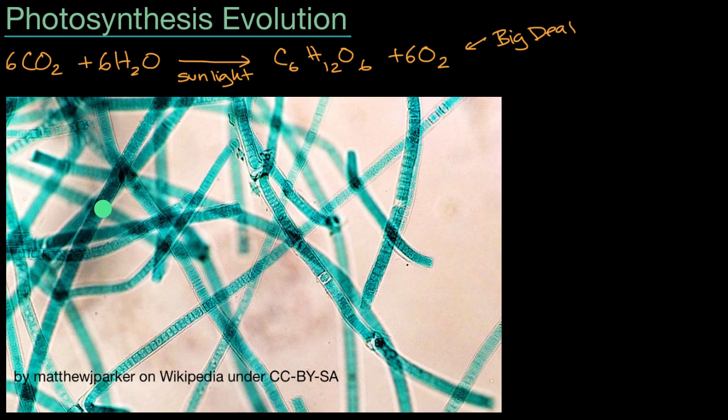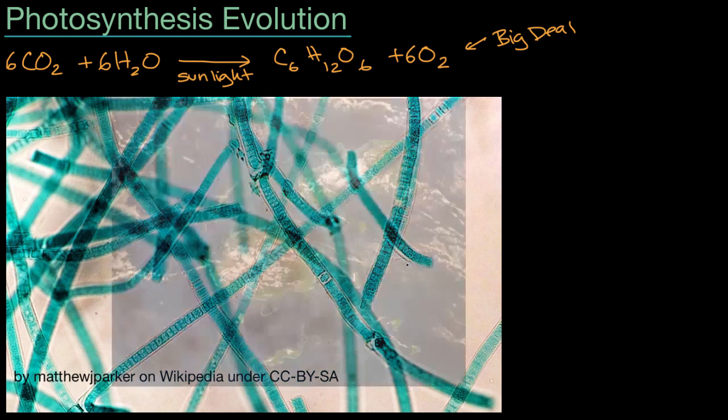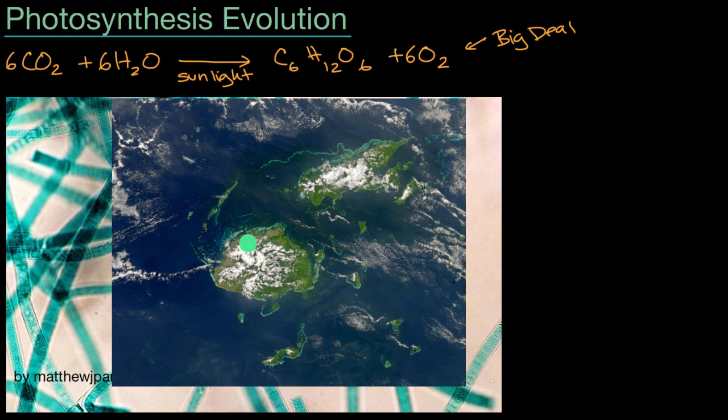And even though this is bacteria, and each of these organisms are very small, in aggregate, they can have a pretty significant impact. For example, this is a cyanobacteria plume near Fiji. And you can see that these are pretty significant things that can be a significant contributor to oxygen in the atmosphere.